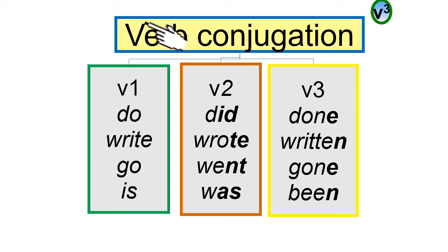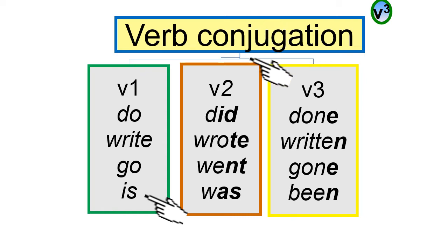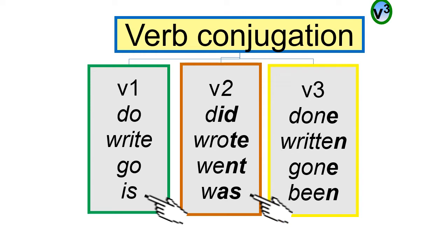V1 verbs are shown in italic only — for example: Do, Write, Go, Is. V2 verbs are shown in italic with the last two letters bold — for example: Did, Wrote, Went, Was.